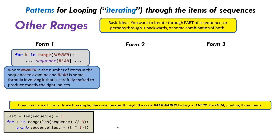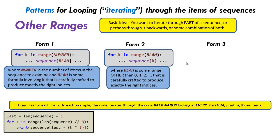An equivalent way to solve this same problem is using Form 2, where we have a for loop, but this time we do the work in the range statement. We choose a range statement that gets the motion going backwards every third item in this example. And then our sequence bracket becomes just k, the loop variable. So the work in Form 1 is done in the expression in the brackets; the work in Form 2 is done in the range statement.